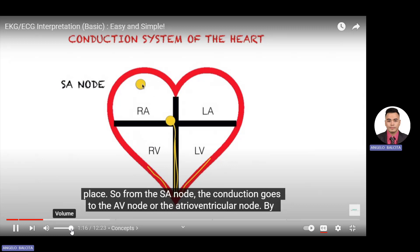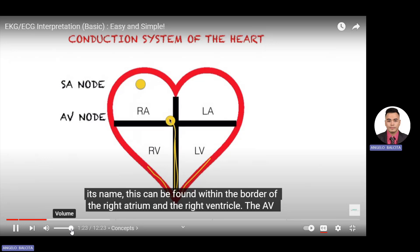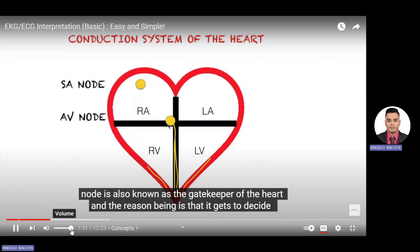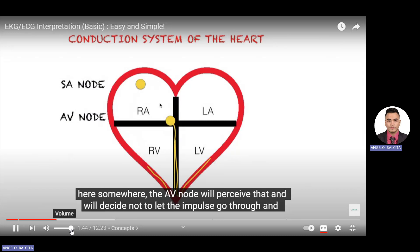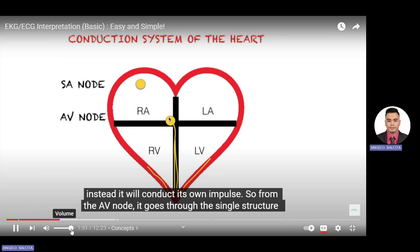From the SA node, the conduction goes to the AV node, or the atrioventricular node. By its name, this can be found within the border of the right atrium and the right ventricle. The AV node is also known as the gatekeeper of the heart — it gets to decide whether to let an impulse through. If the SA node generates a weak impulse or there is a block somewhere, the AV node will perceive that and will conduct its own impulse instead.